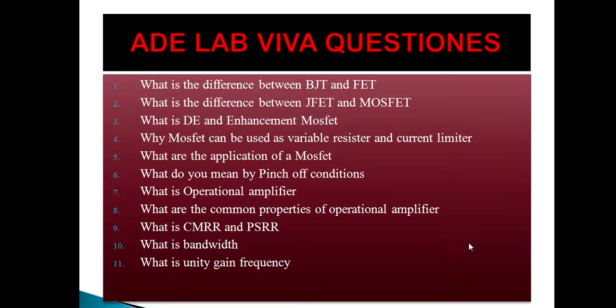Fourth one is input impedance — normally high input impedance — and output impedance, which is low. Then open loop gain, then closed loop gain. These are the important properties. Other than that we have one more property: CMRR and PSRR.